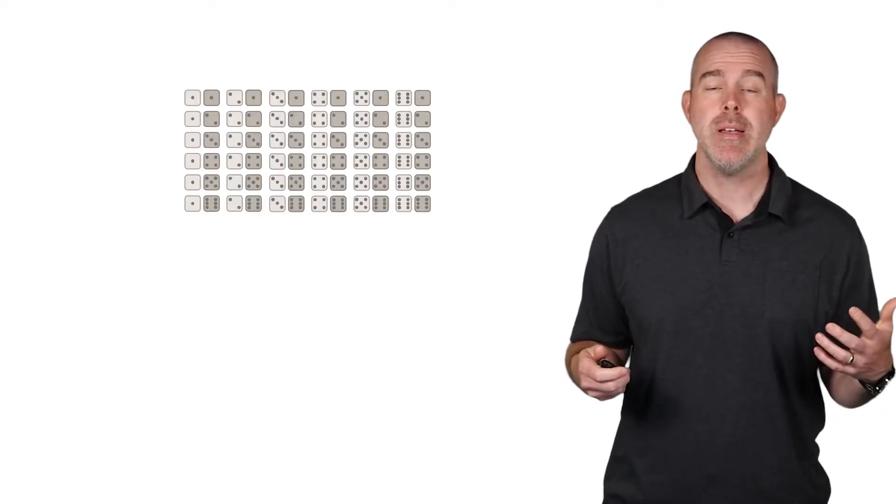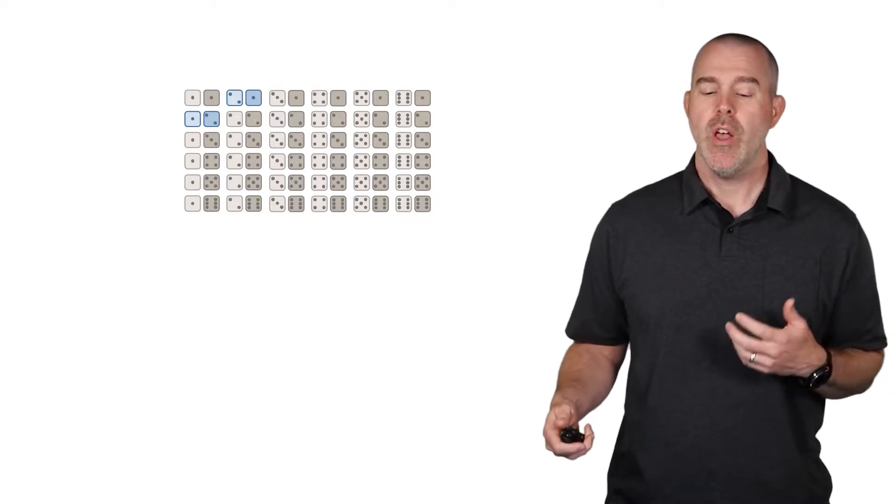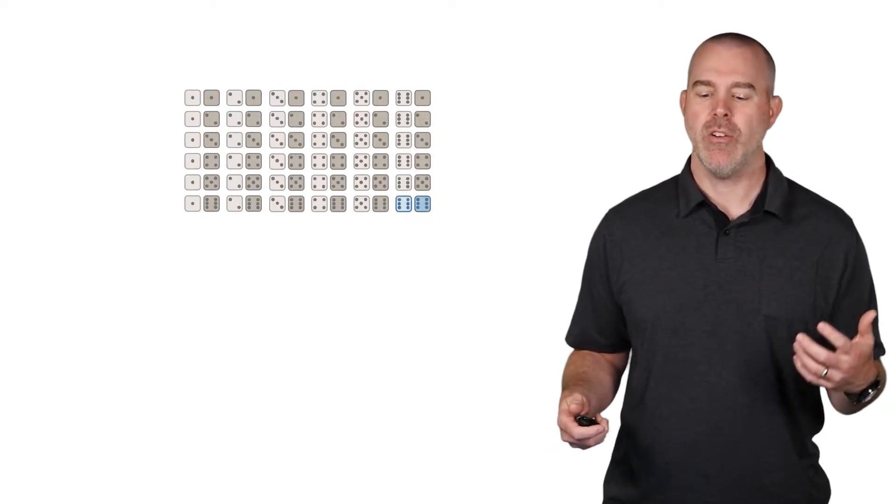Before we can get to that, we have to build up a little theory. Remember the dice example where we threw two dice and we found the sum? We could have 2, 3, 4, etc. down to 12.